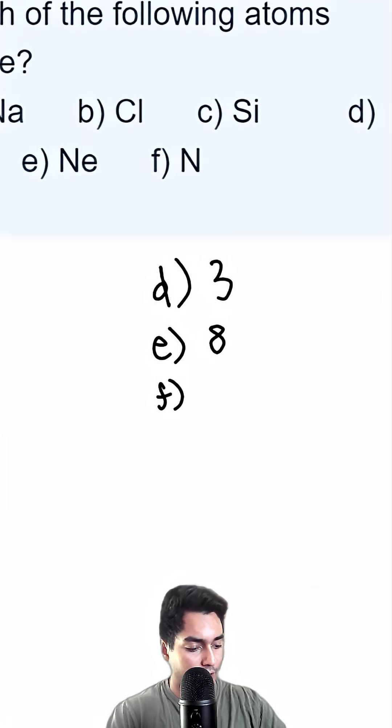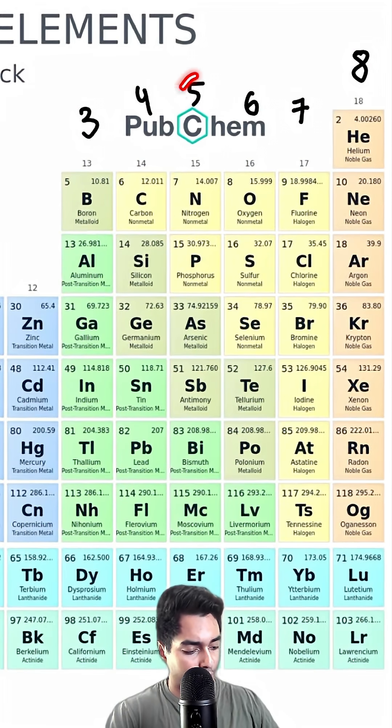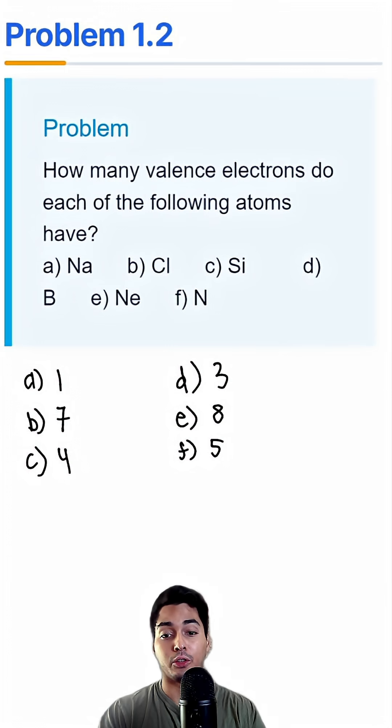Last but not least, we have nitrogen. Nitrogen lives right here, so it has five. Follow for more practice problems.